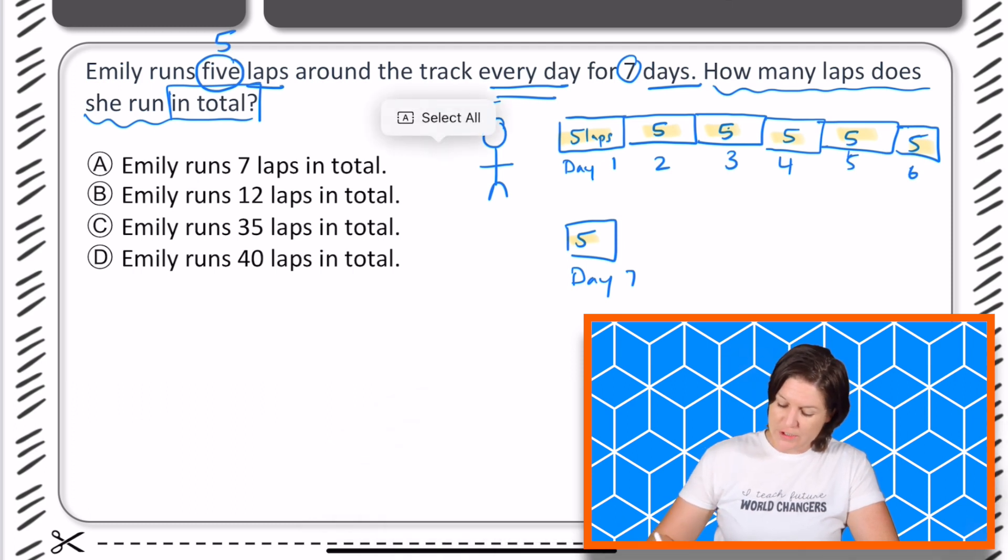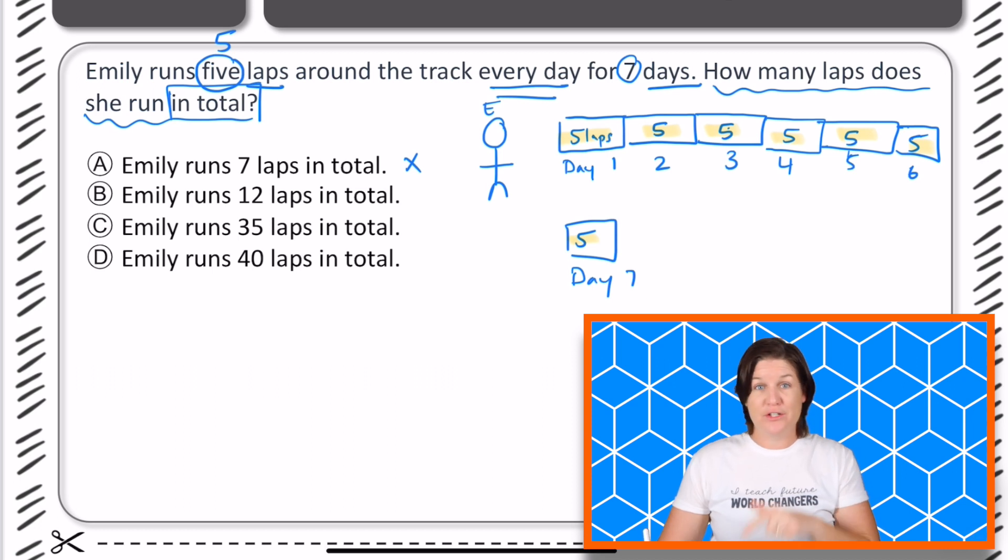So let's go through each of these. Emily runs seven laps in all? Nope, that's how many days she runs for. She runs twelve laps? Now that answer may be put there to confuse somebody who might think I have five and I have seven, maybe if I add them together I'll get twelve, but that is not the right choice. Thirty-five is, so we'll mark C. And Emily runs forty laps in total? She does not.